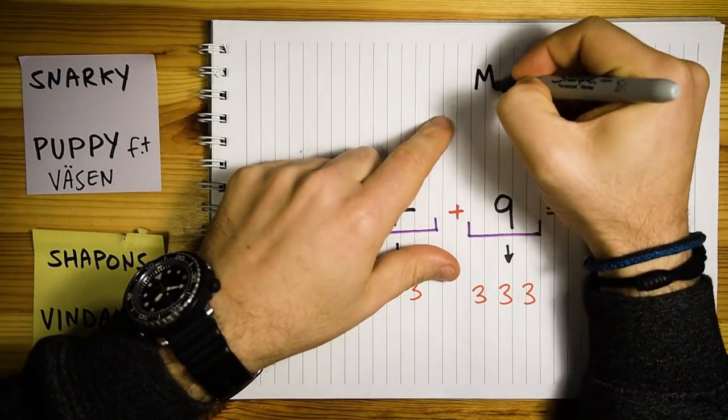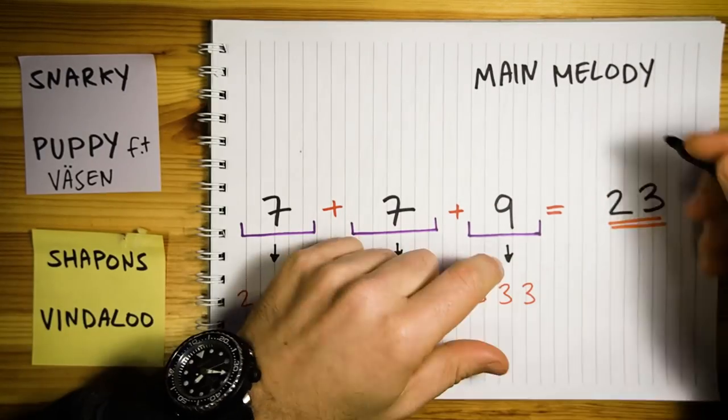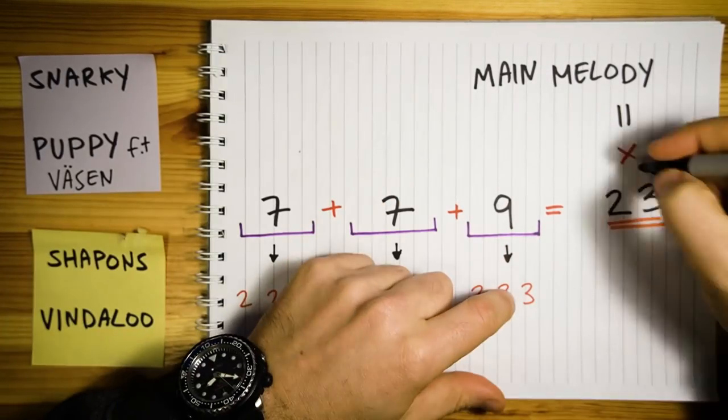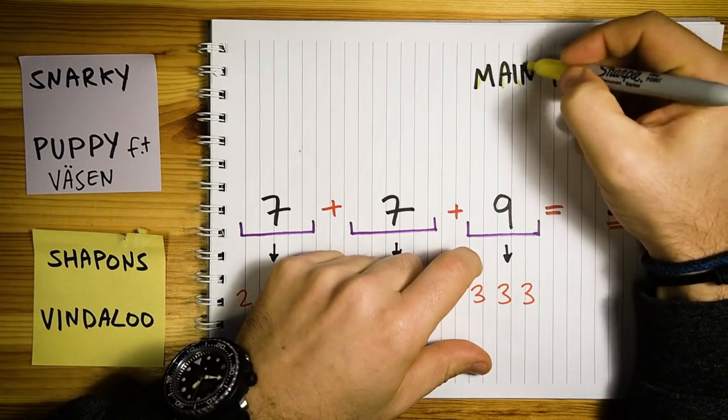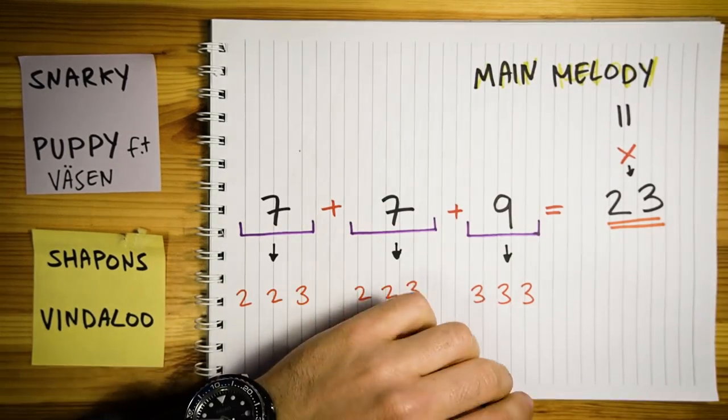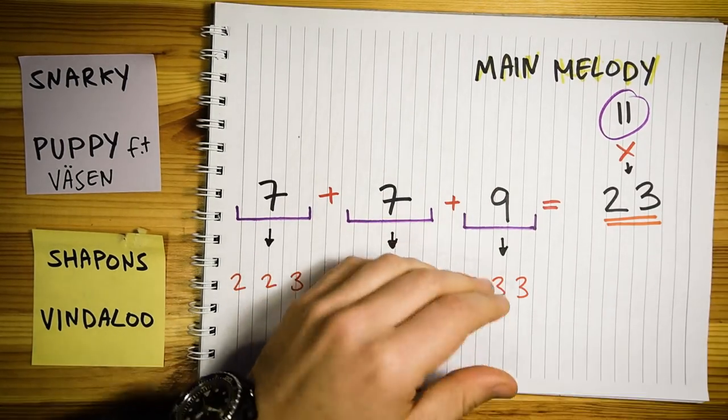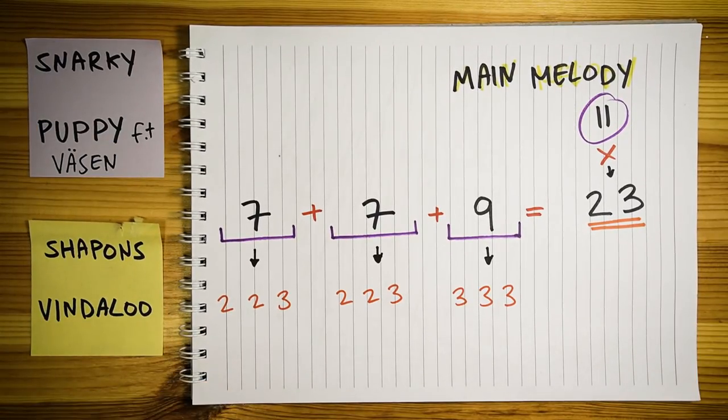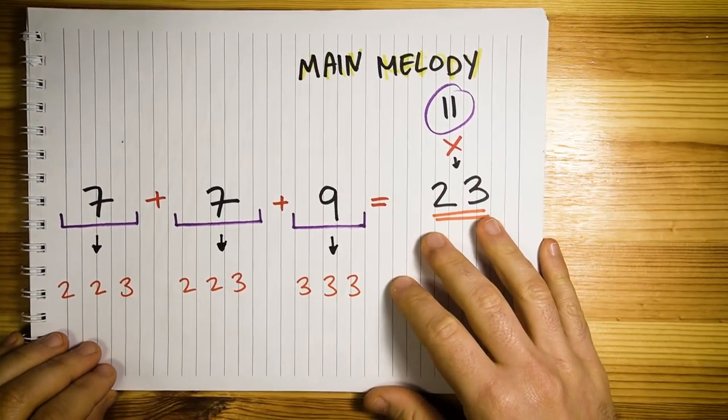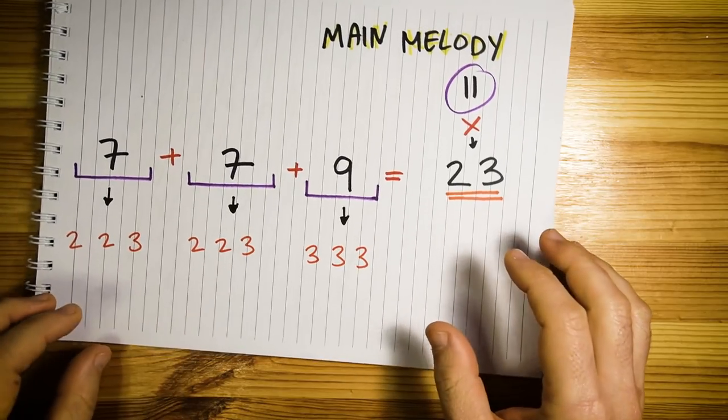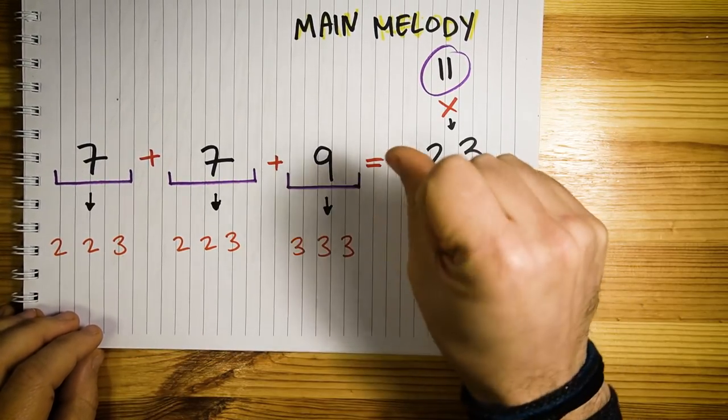The main melody is basically one big through-composed line that spans over 11 of these full bars. Some of the melodic ideas are divided differently than the meter, and some ideas accent different beats within the clave. This creates a continuous flow of awesomeness that blurs the complexity of the time signature.